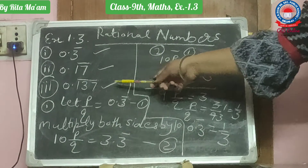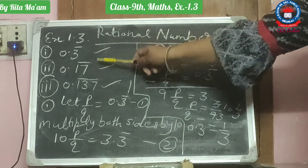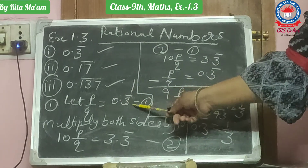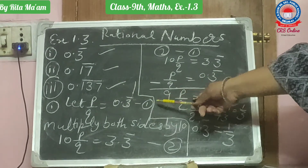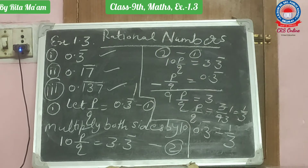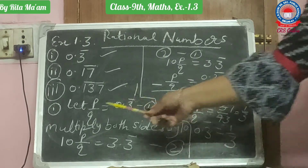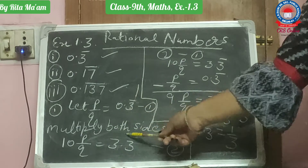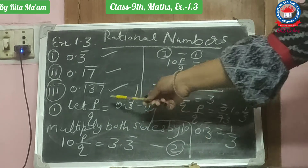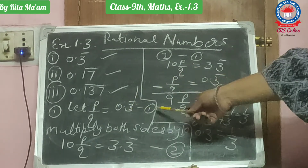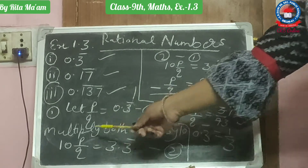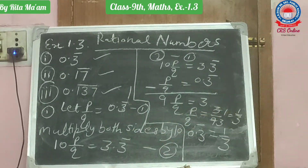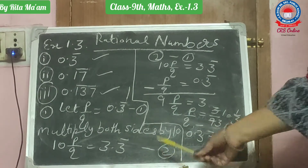First of all, you will let P upon Q equal to 0.3 bar. You will take this as equation number 1. Now you will multiply this equation on both sides by 10. It will become 10 P upon Q equal to 3.3 bar. This is your equation number 2.